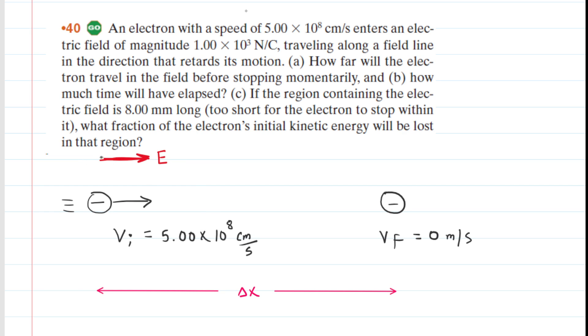Now we've drawn the electric field pointing in the same direction as the motion of the electron because it turns out that when you have negative charges, then the electric field is going to produce an electric force in the opposite direction of the field. So if the field is pointing to the right, then the electric force on the electron would be pointing to the left. So you can imagine an electric force pushing the electron to the left, and that's going to actually slow it down.